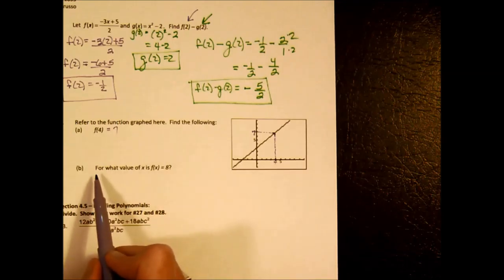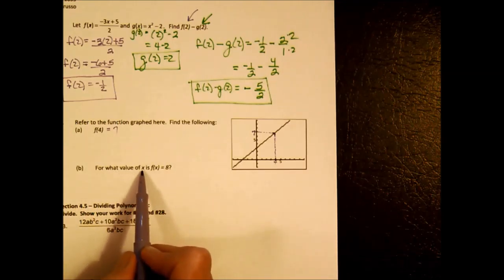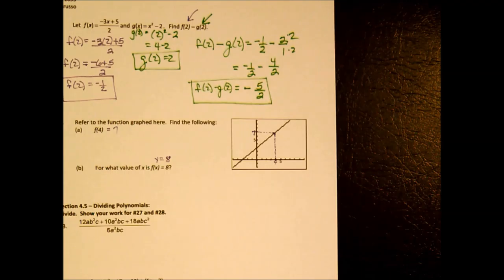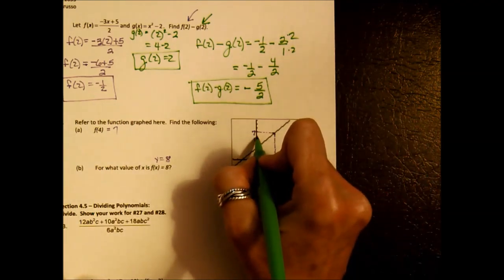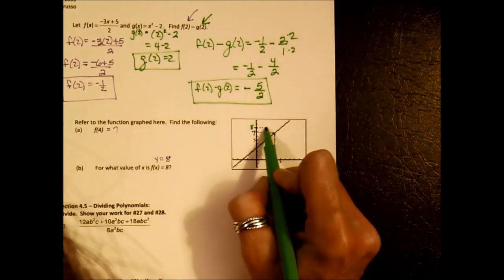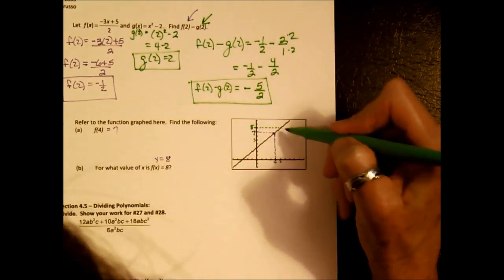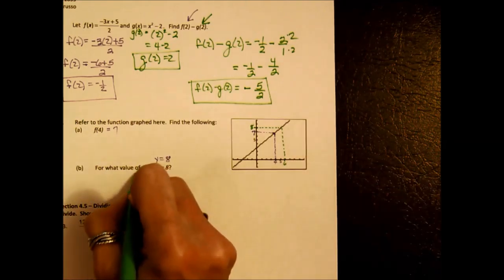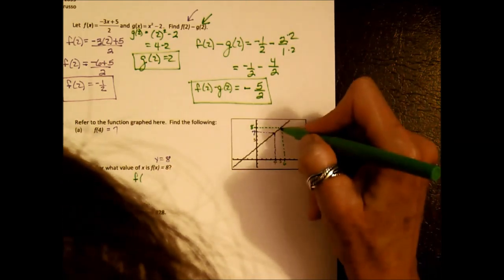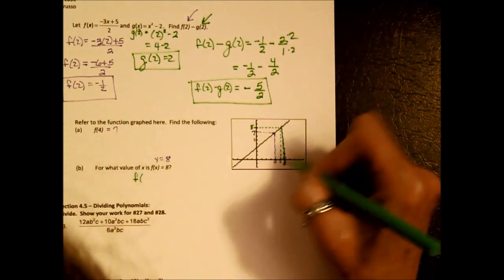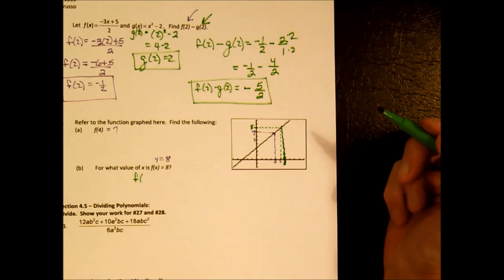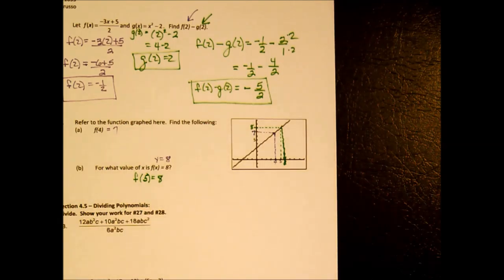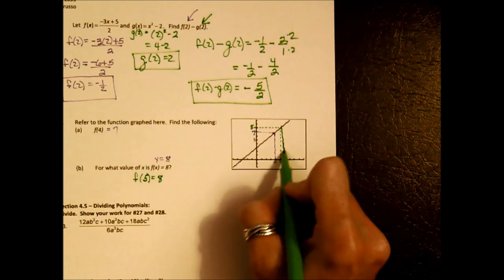For 'what value of x makes f(x) equal to 8?' — the y is 8. Find 8 on the y-axis, go over to the graph, then come down. f(5) equals 8. Using a straight edge would have made this more precise — easy mistake to make otherwise.